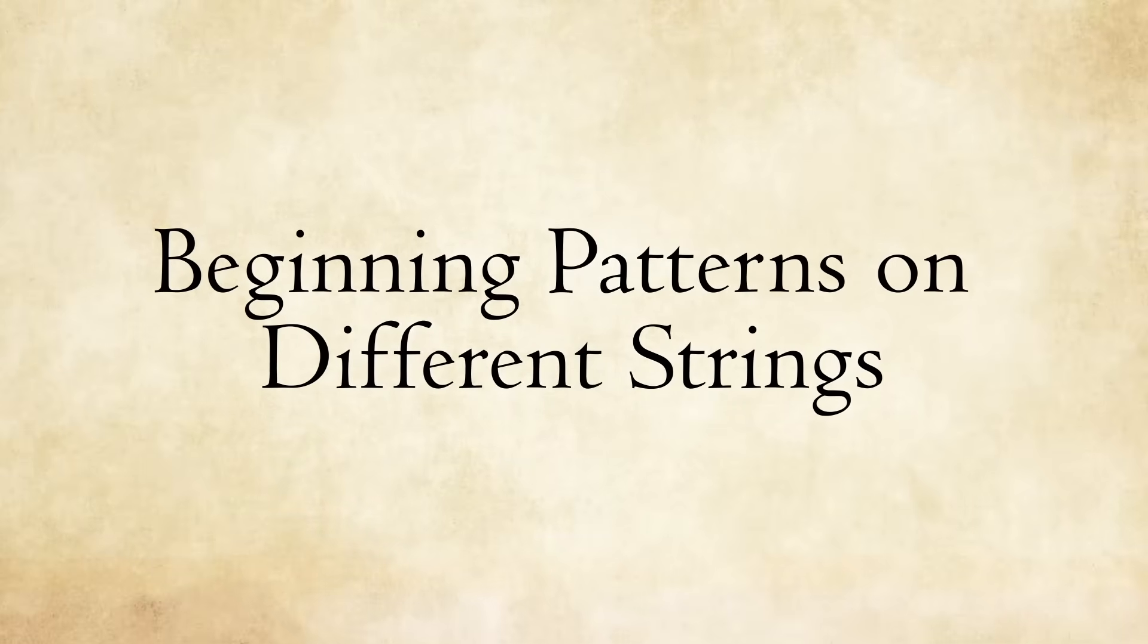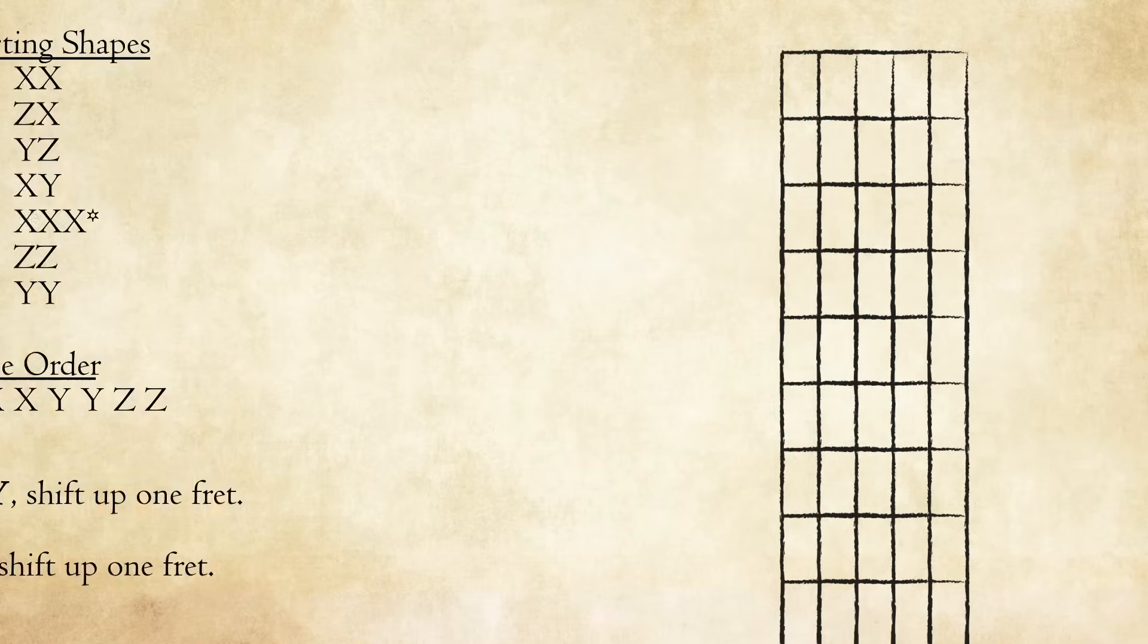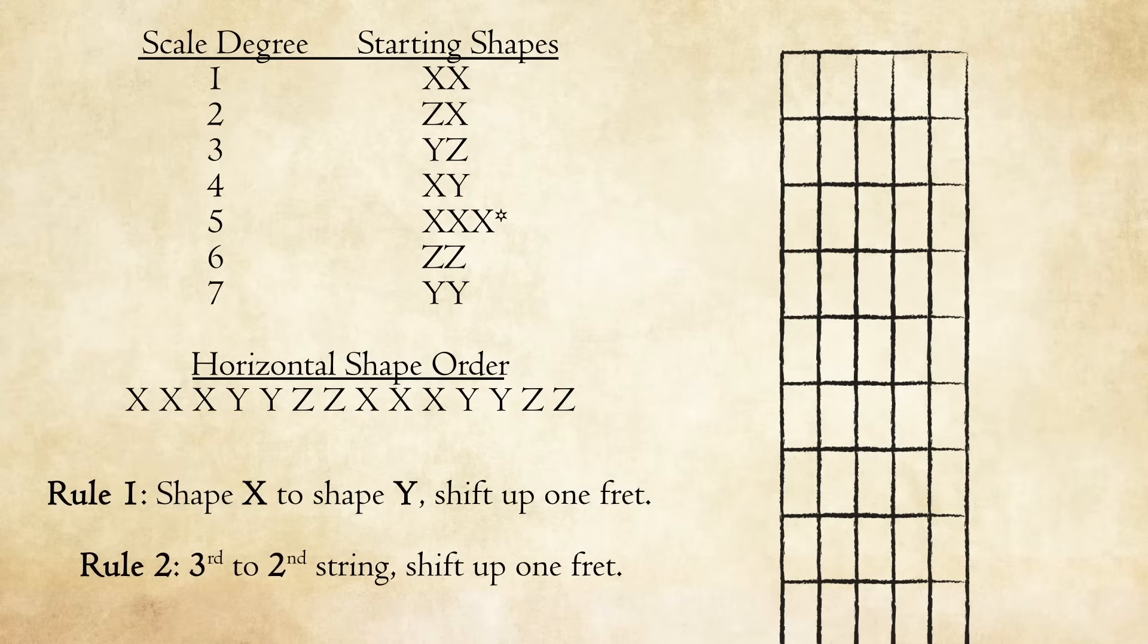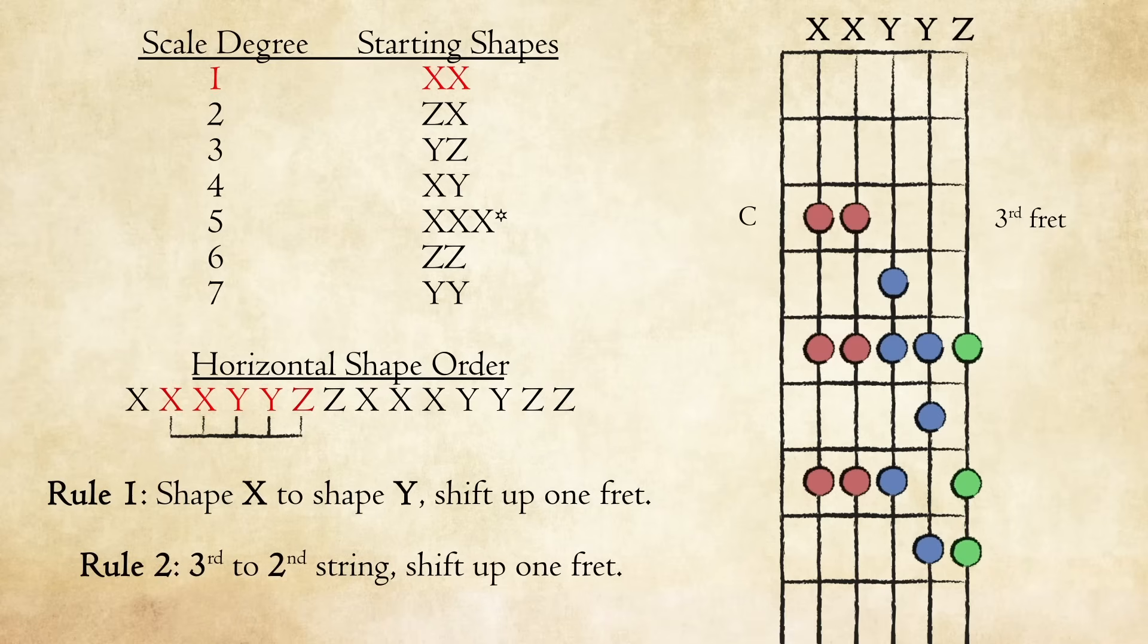Up to this point, we've begun all our scale patterns on the sixth string, but what happens if we need to begin a scale on the fifth or fourth strings? The answer is to simply follow the same rules you've already been applying. In this example, we have a C major scale beginning on the third fret of the fifth string. We're starting with shapes XX since we're beginning the scale on the first degree, and then just shifting up at the appropriate times. All the same rules apply, regardless of what string you start on.